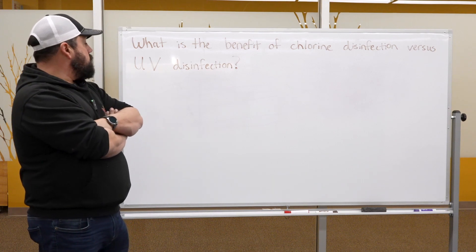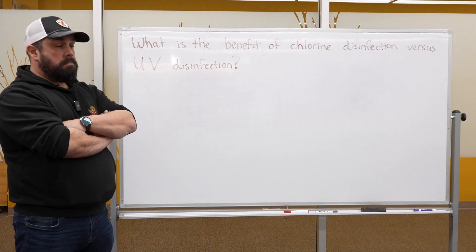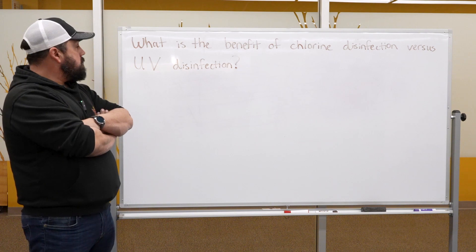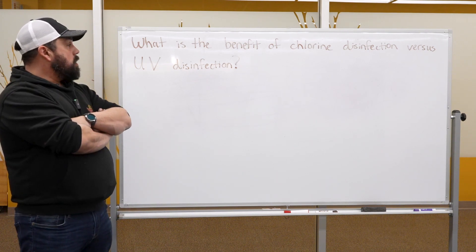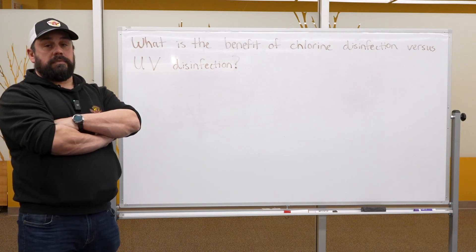UV is also used primarily on surface water because the surface water will have more bacteria and other harmful pathogens, and the chlorine will always be used as a residual effect on the far end of UV disinfection.